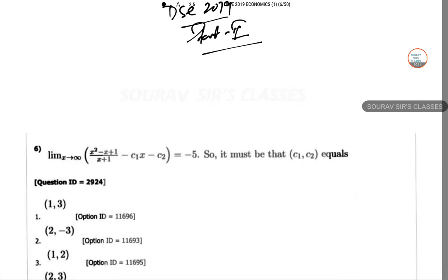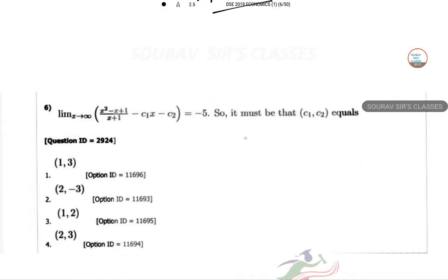So in this question we have been given a limiting value and we have 2 arbitrary constants. So C1 and C2 must be equal to what? So let us just combine this structure, limit x tends to infinity, so x square minus x plus 1. So multiplying the denominator and numerator separately for all the terms with x plus 1.